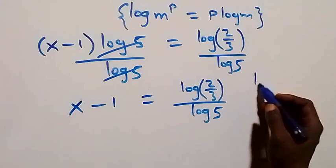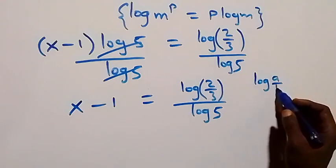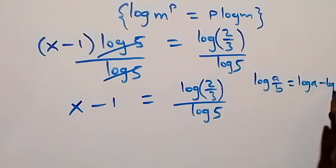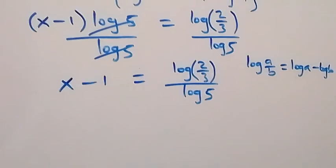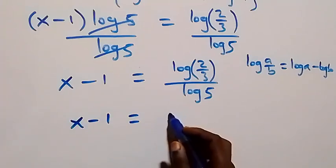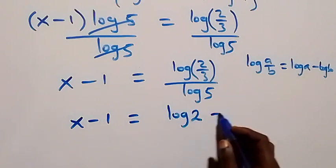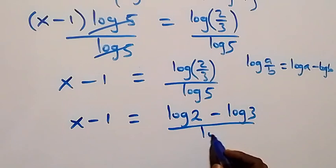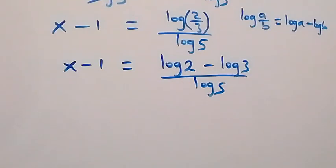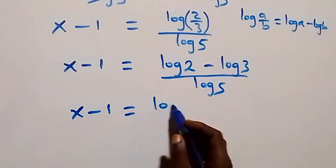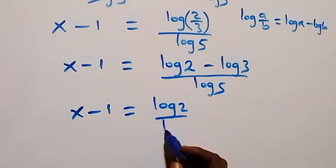From the law of logarithm, log(a over b) can be written as log a minus log b. Applying this, we have x minus 1 equals log 2 over log 5 minus log 3 over log 5. We can separate this fraction into two parts: x minus 1 equals log 2 over log 5, then minus log 3 over log 5.